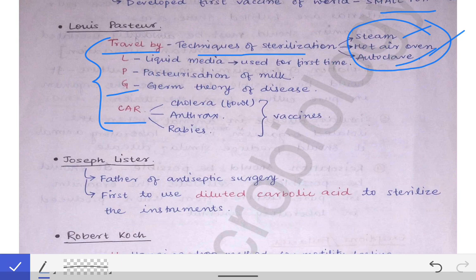Moving on in the mnemonic 'LPG car': L stands for liquid media. Louis Pasteur was the first to use liquid media for the culture of microorganisms, such as nutrient broth. We will see what nutrient broth is when we read about culture media.